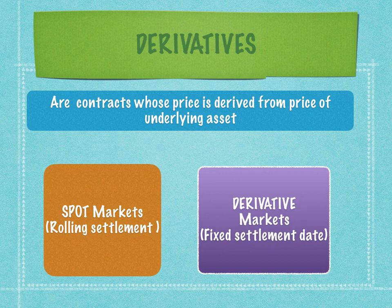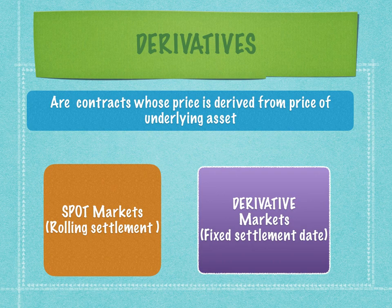Rolling settlement means settlement that takes place on T+1 or T+2 days. Every day the trade is rolled over to the next working day or two working days after the trade date, for settlement purposes. This is a key difference between the spot market and the derivative market — from the point of view of pricing, derivatives have many additional factors compared to pricing of the spot market asset.